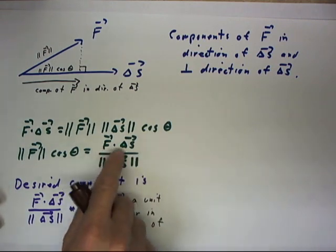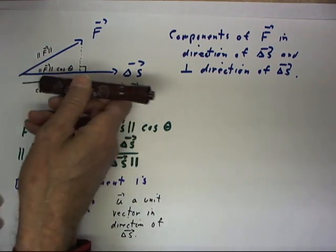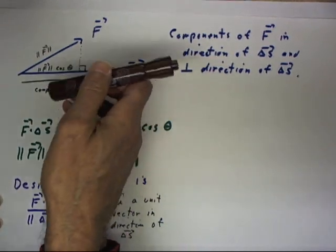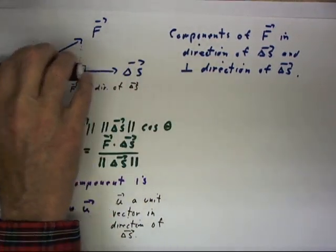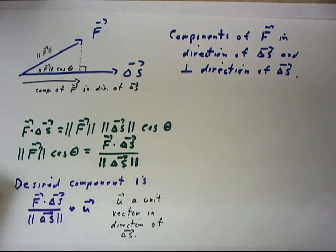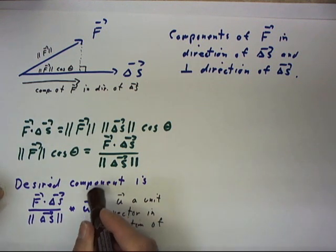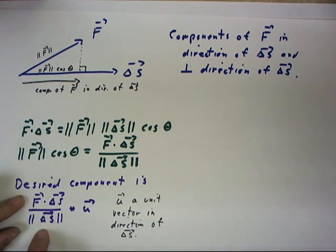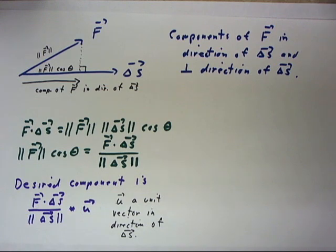And that this will be either positive if f has a component in this direction or negative if the component is in this direction. So the desired component is just f delta s over magnitude of delta s multiplied by a unit vector, u being a unit vector in the direction of delta s.